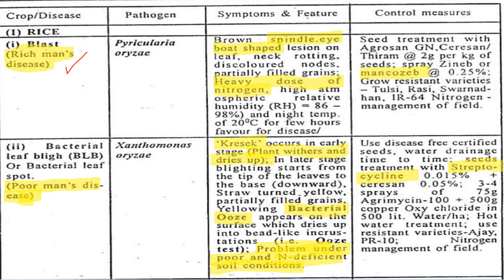This disease is due to a heavy dose of nitrogen. If you apply more nitrogen, rice will be blasted. If you are a rich man, you have a lot of nitrogen/urea and can supply it — that is why it is called rich man's disease.